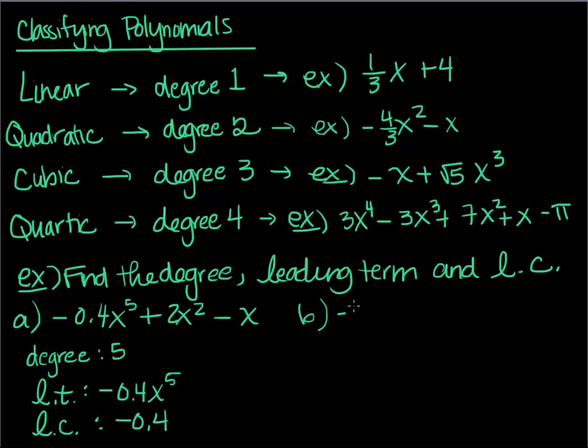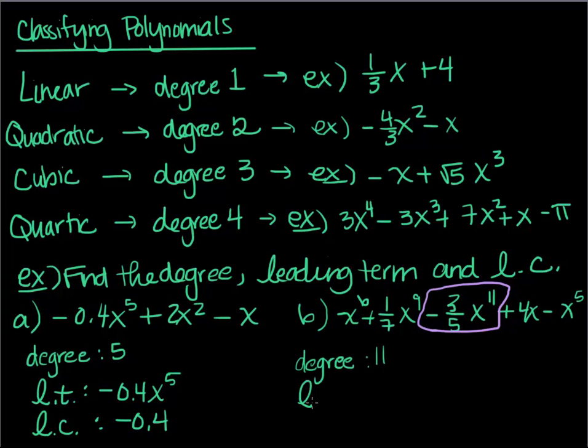What about something like this? How about x to the sixth plus one seventh x to the ninth minus three fifths x to the 11th plus 4x minus x to the fifth. Why not? Let's get a little crazy. So this is not in descending order, if you notice. So I'm going to go through and find my term with the largest exponent. And this guy is my winner. So this guy is going to help us determine everything. So degree, what's the exponent there? Largest exponent would be 11. Leading term then would be negative three fifths x to the 11th. And what is the leading coefficient? It's just negative three fifths. So I hope that makes sense. This should be pretty easy. It's not too difficult.